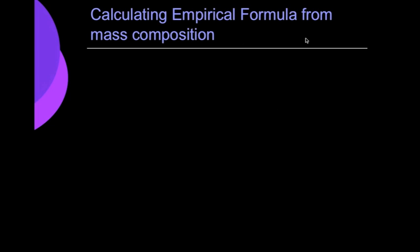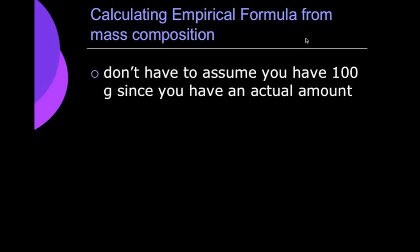Now, when we calculate the empirical formula from the mass composition, basically what it's talking about here, what we're doing is we're skipping a step. If they don't give us the percent composition, they just tell us how much it weighs or how much is in each sample. All we do is we just skip the first step and then follow all the other steps the same way.